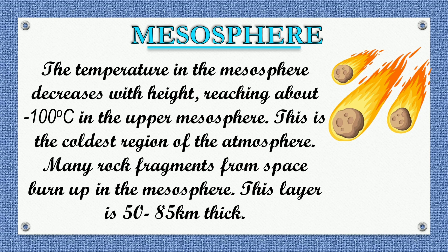Mesosphere: The temperature in the mesosphere decreases with height, reaching about minus 100 degrees Celsius in the upper mesosphere. This is the coldest region of the atmosphere. Many rock fragments from space burn up in the mesosphere. This layer is 50 to 85 kilometers thick.